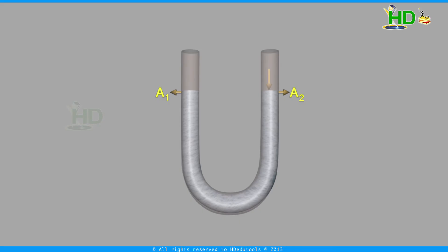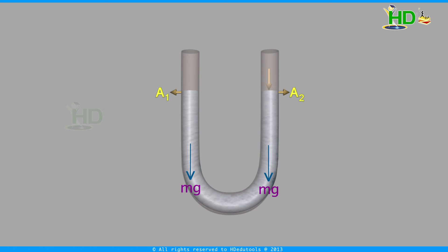Now we take another example of simple harmonic motion. Take a U-shaped tube and fill it with water up to levels A1 and A2 in limbs L1 and L2. Apply a force in one of the limbs. This force disturbs the equilibrium of the water in the tube, and the water level oscillates about the mean positions A1 and A2. A component of force due to gravity acts on the center of mass of the water when it is displaced from its equilibrium level. Thus, the water oscillates in simple harmonic motion until equilibrium is restored.